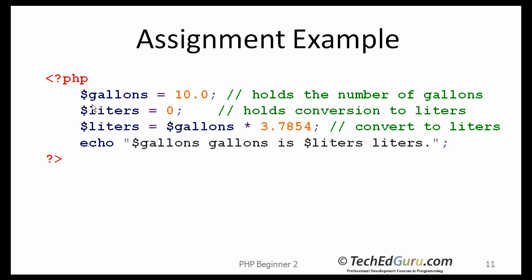Here is a little more interesting assignment example. You have a gallons variable containing 10, and then you want to convert gallons to liters. Here is gallons times 3.7854, which is the conversion factor. And the result that you get, you are assigning it to the variable liters. And then using the echo statement, you will print that information out.